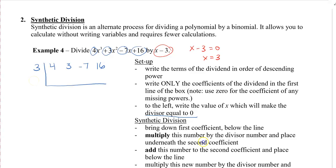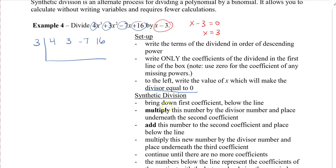Now let's do synthetic division. The first step is to bring down the first coefficient and write it below the line. So we bring down 4. Then we multiply this number by the divisor number and place it underneath the second coefficient. So 4 times 3 is 12, and we write it underneath the second coefficient.